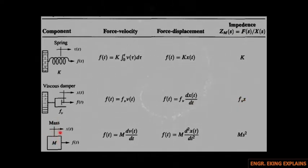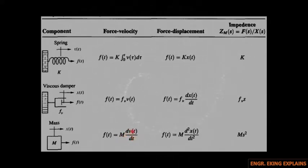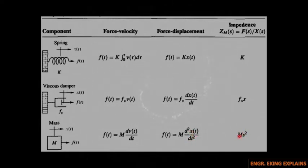For the mass, we have the displacement and the force. By Newton's law, f(t) equals mass times acceleration. So f(t) equals m times the derivative of v(t), which is the first derivative of velocity. The force-displacement relationship uses the second derivative of displacement, and the impedance is ms².